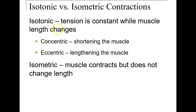Isotonic versus isometric contractions: in isotonic contractions the tension is consistent and we are moving the muscle. Concentric isotonic contractions shorten the muscle — such as picking up a book. Eccentric isotonic contractions lengthen the muscle — such as laying the book down. Isometric contractions occur when the muscle contracts but does not change length, like trying to pull open a stuck door while keeping constant tension.